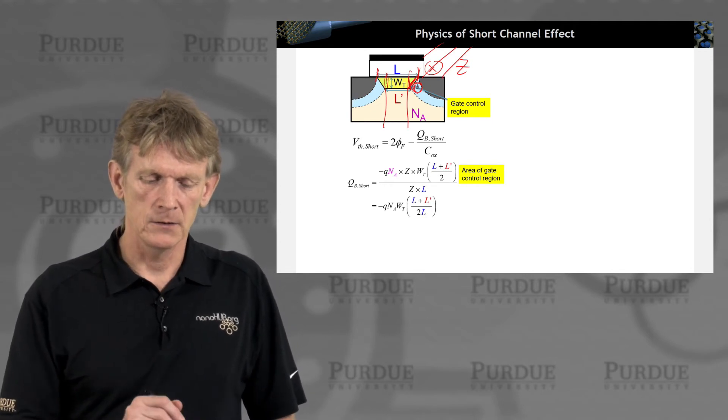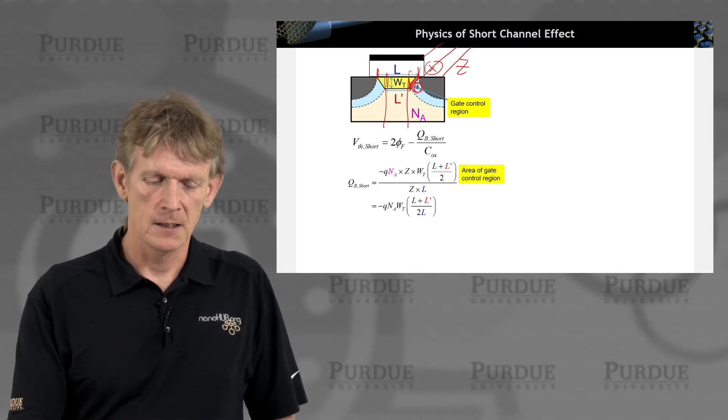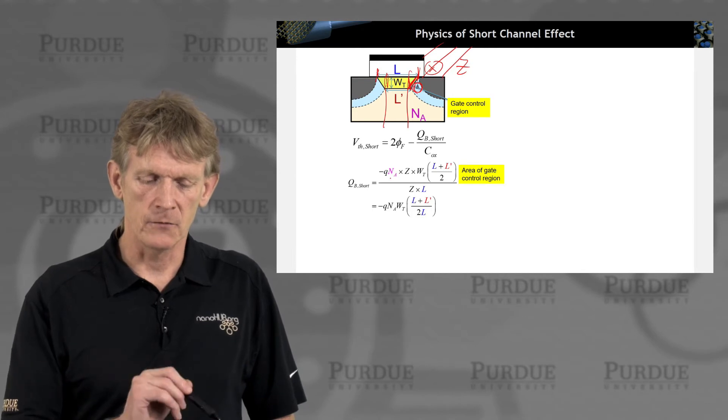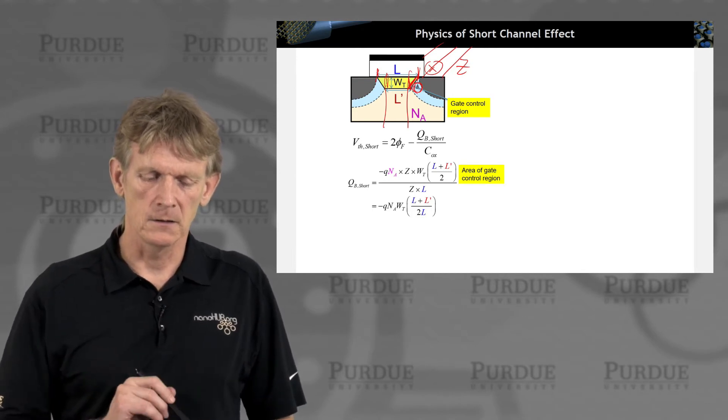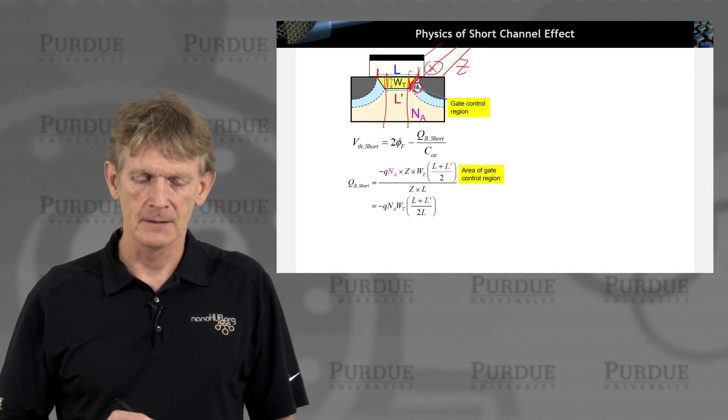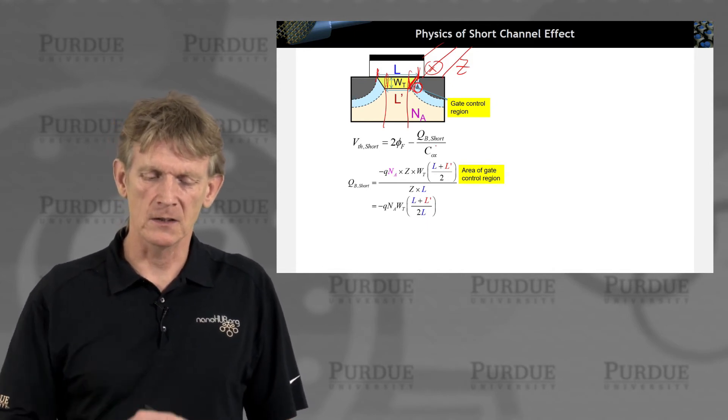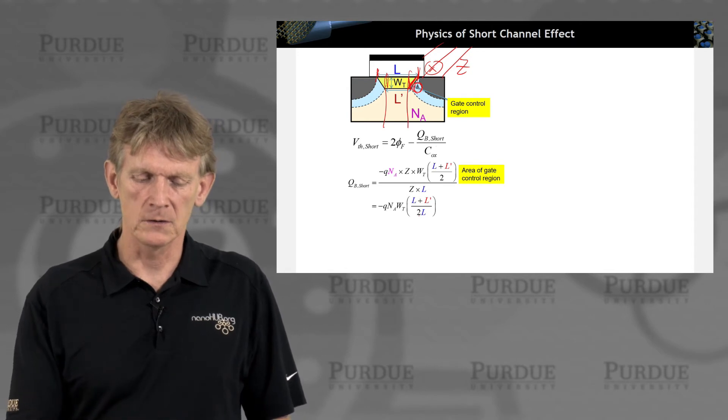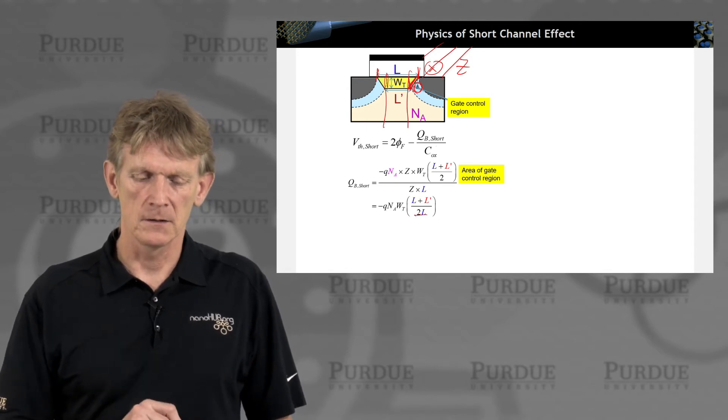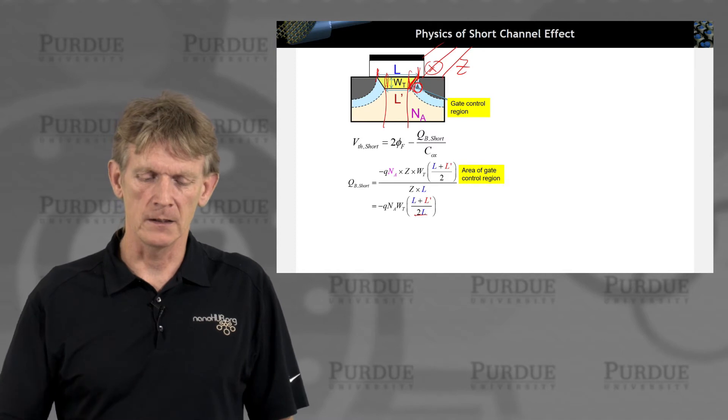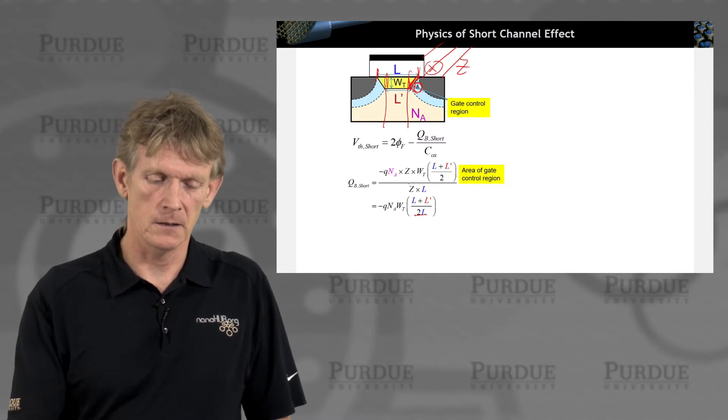That's the charge at the inversion point. Here's the doping, and Q the charge. Then you divide this by the oxide capacitance, which includes a factor of 2L here, ultimately, or L in here.